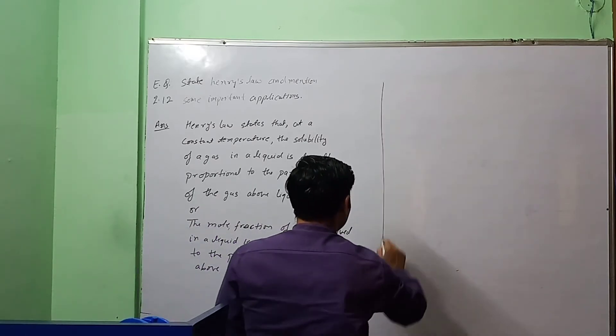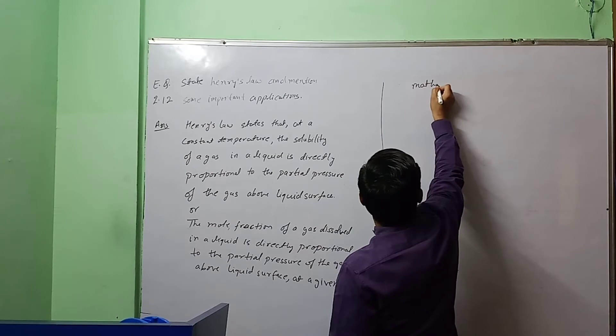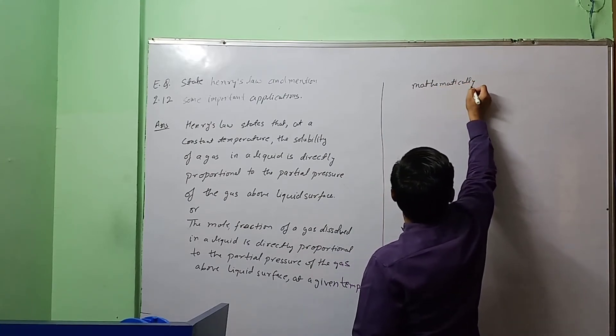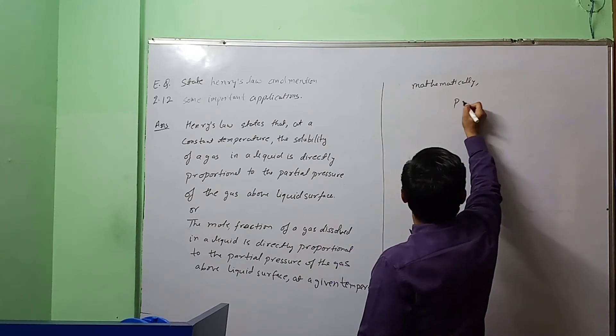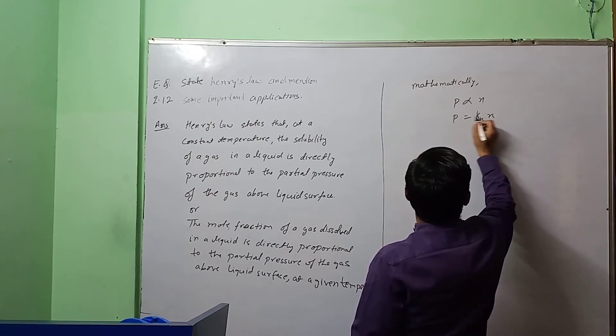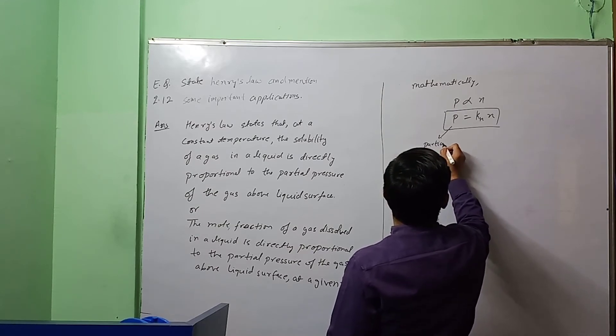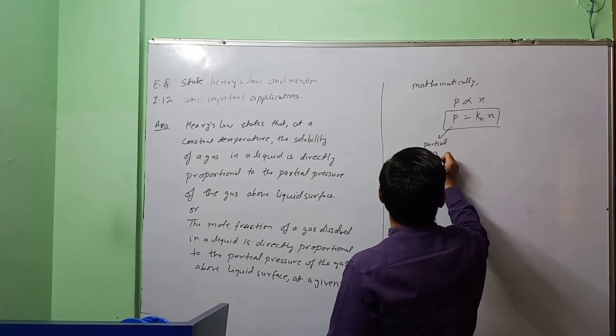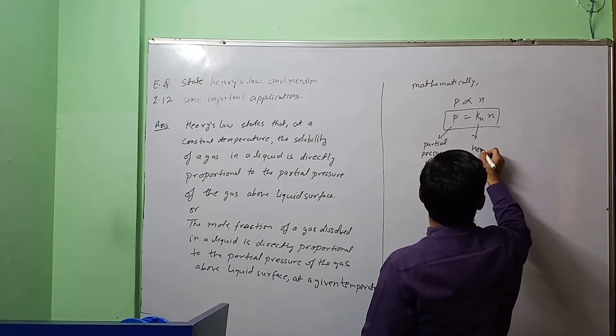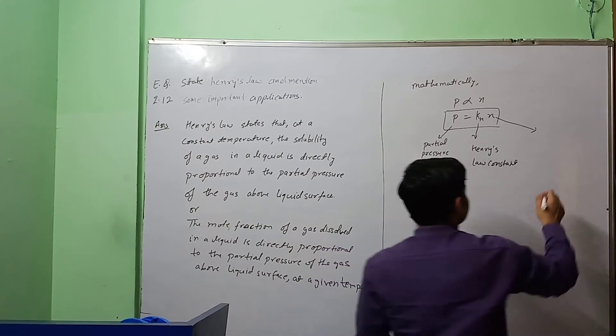So mathematically we can write: p is proportional to x and p is equal to KH into x, where p is partial pressure of gas, KH is Henry's law constant